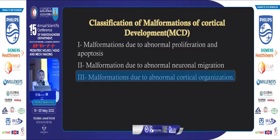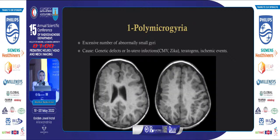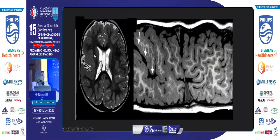The third category is malformation due to abnormal cortical organization, which includes polymicrogyria, schizencephaly, and dysgyria. Polymicrogyria is an excessive number of abnormally small gyri, caused by genetic defects, in-utero infections (commonly CMV and Zika virus), various teratogens, and ischemic events. Axial T1 shows excessive small tightly packed gyri consistent with polymicrogyria; axial T2 shows polymicrogyria involving the sylvian fissure; and 3D T1 curvilinear reformat also demonstrates the polymicrogyria. Another case shows polymicrogyria involving the left frontal lobe.